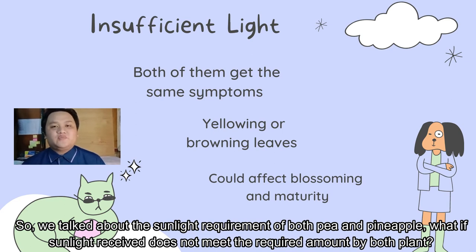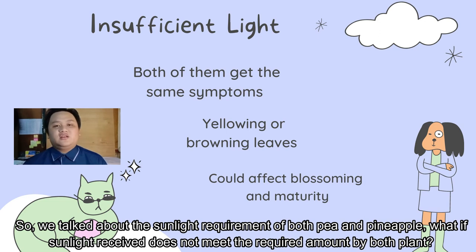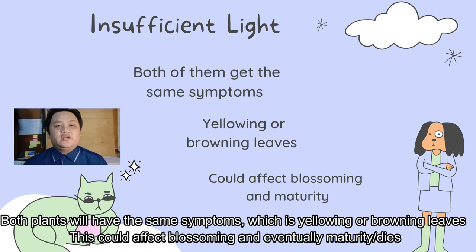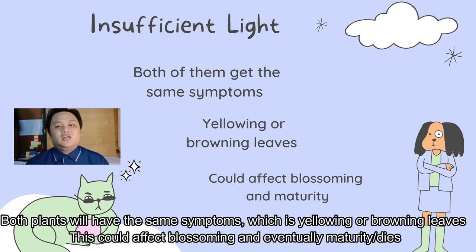As we talked about in the previous topics — the sunlight requirement by both pea and pineapple — in this topic I am going to focus more on what happens if both pea and pineapple do not get the required amount of sunlight per day. Actually, both pea and pineapple have the same symptom, which is yellowing or browning leaves. This could affect the blossoming and eventually maturity, which leads to death.